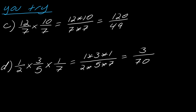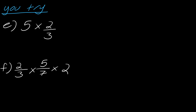Pause and try examples E and F. For E, you need to think about it a little first: 5 can be rewritten as 5 over 1. Then everything works the same — 5 times 2 is 10, 1 times 3 is 3, giving us 10 thirds.